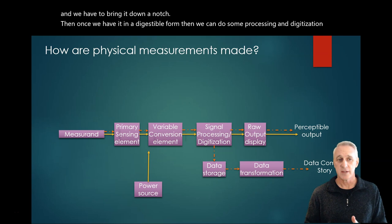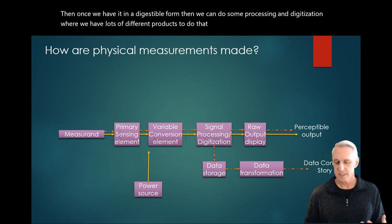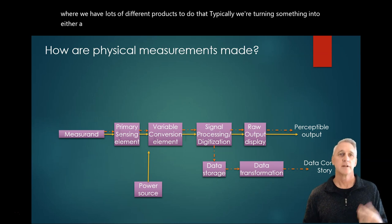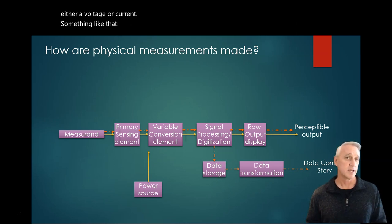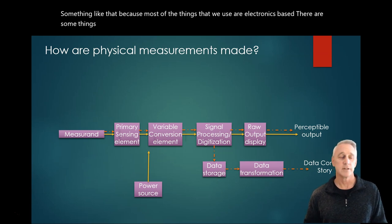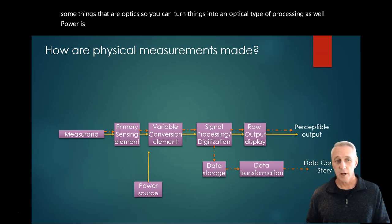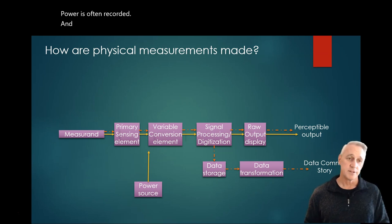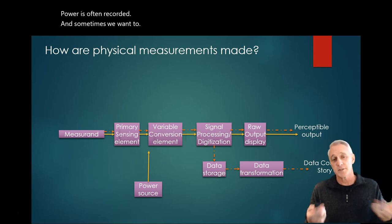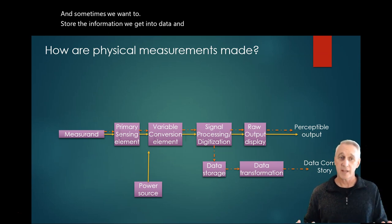We have lots of different products to do that. Typically, we're turning something into either a voltage or a current, something like that, because most of the things that we use are electronics-based. There are some things that are optics, so you can turn things into an optical type of processing as well. Power is often required, and sometimes we want to store the information we get into data, and that's when we finally have something called data.